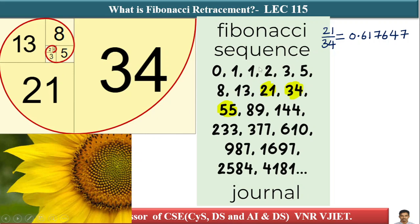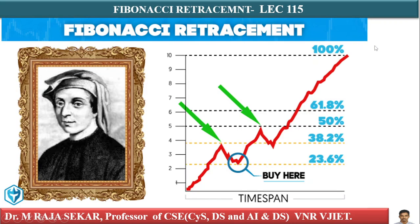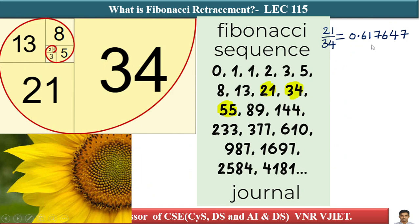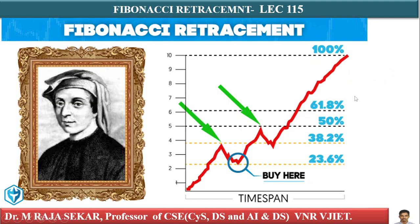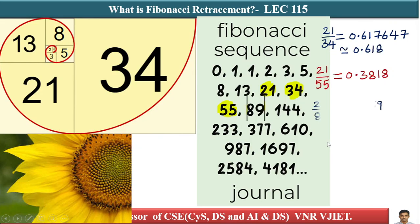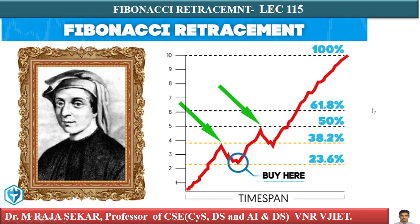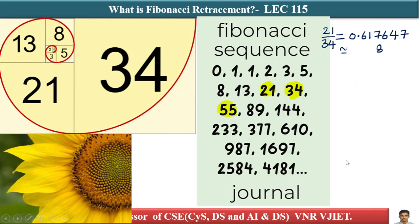You might have seen this in many places. For example, randomly taking the number 21, dividing by the next number 34 gives 0.6176 — I can treat this as 61.8. Similarly, taking 21 and dividing by 55 gives 38.18, which can be treated as 38.2. And 21 divided by 89 gives 0.2359, which is 23.6. There is a logic behind it — this is how you can derive all these numbers.